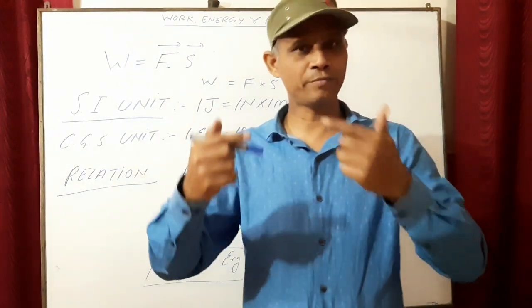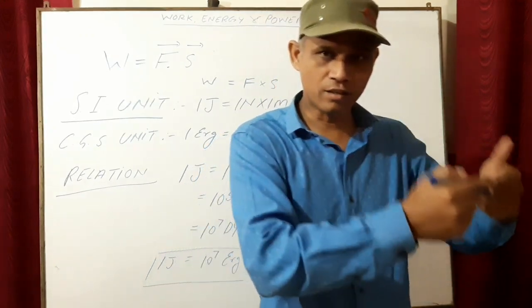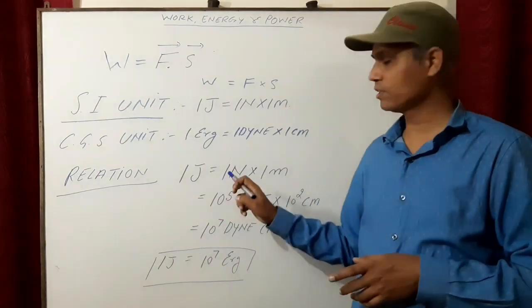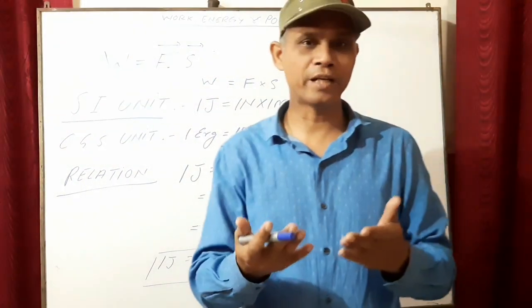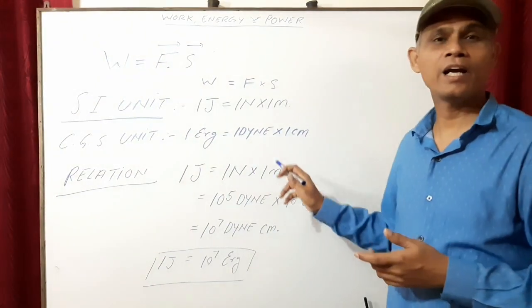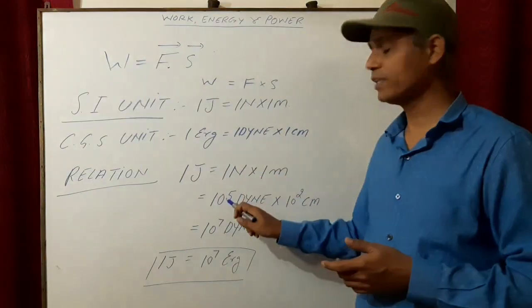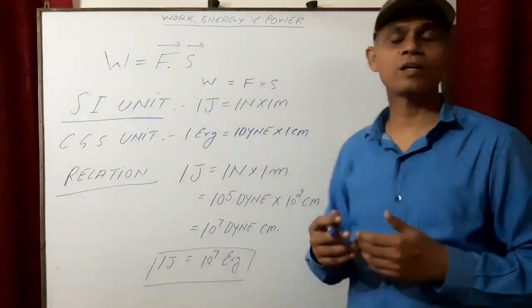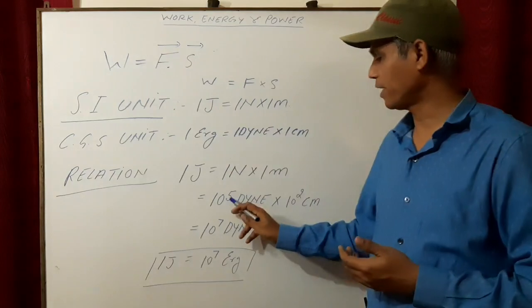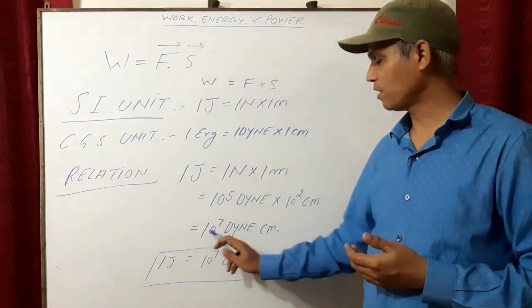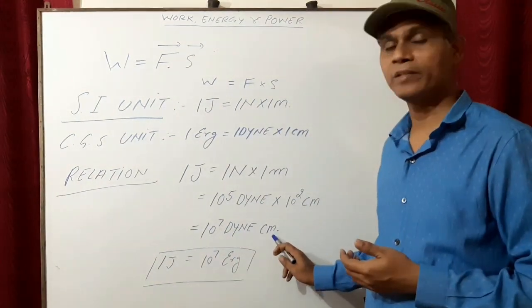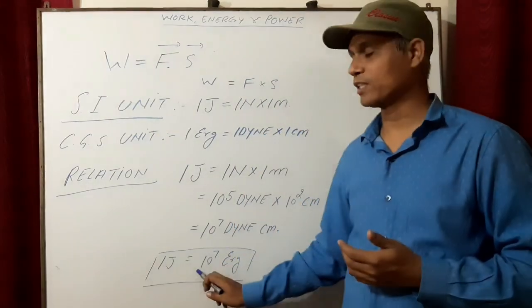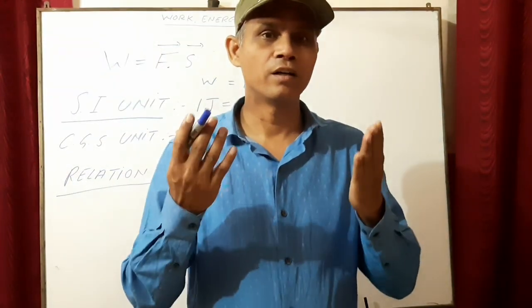What is the relation between Joule and erg? You know 1 Joule is 1 Newton multiplied by 1 meter. In 1 Newton there are 10 to the power 5 dynes, and in 1 meter there are 10 to the power 2 centimeters. So 5 and 2, 7, that's 10 to the power 7 dyne-centimeter. And dyne-centimeter means erg. So 1 Joule is equal to 10 to the power 7 erg.